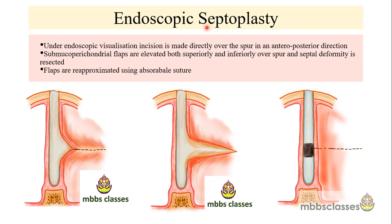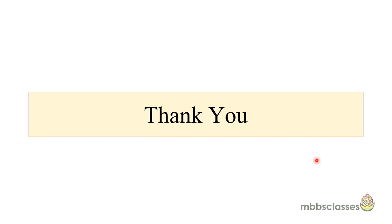Endoscopic septoplasty is done with the help of a zero-degree endoscope. The main advantage is visualization, which is a constraint with the traditional headlight technique. The second advantage is good magnification. Under endoscopic visualization, the incision is made directly over the spur in an anterior-posterior direction, the submucoperichondrial flaps are elevated superiorly and inferiorly, the septal deformity is resected, and the flaps are re-approximated with absorbable sutures.